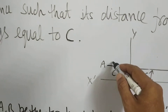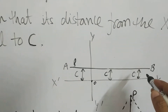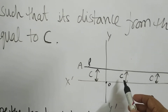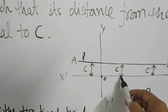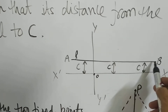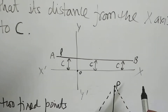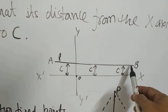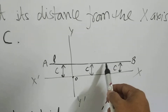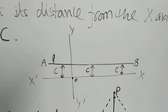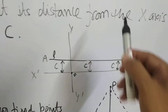Now suppose a point P is there. It moves in such a direction or on such a line that every time it is at a distance C from the x-axis. This distance from the x-axis is C here, and it is also C there because line AB is parallel to the x-axis. The distance between line AB and the x-axis is C, so if any point moves along this line it will always be at distance C from the x-axis. This line becomes the locus of point P.